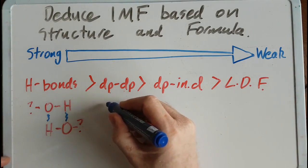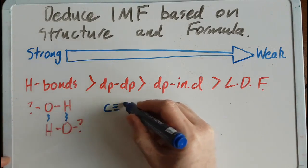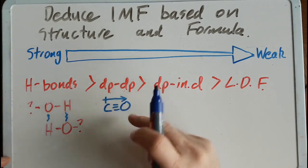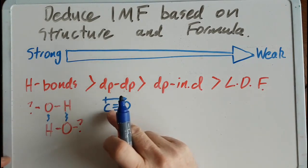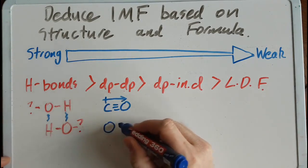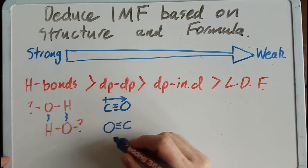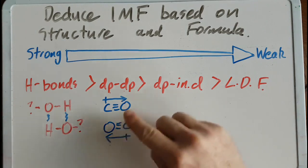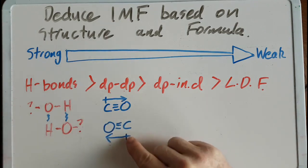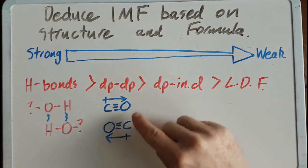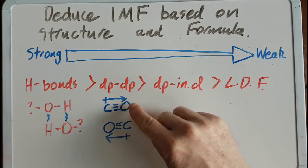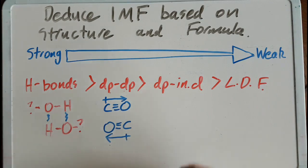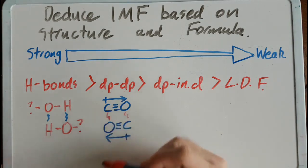Looking at dipole-dipole, let's use carbon monoxide as an example. Carbon monoxide has a dipole because oxygen is more electronegative than carbon. If you put that next to another carbon monoxide, they behave like little magnets. The positive part of this molecule, carbon, is going to be attracted to the negative part of the other molecule, which is oxygen. These are the dipole-dipole forces.